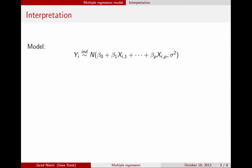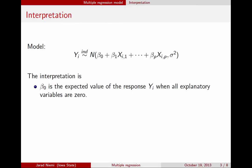Before getting to an example, I'll talk about the interpretation of the parameters for this model. The interpretation changes slightly from simple linear regression. The interpretation of the intercept is that it's the expected value of the response when all explanatory variables are zero. In simple linear regression we only had one, but now with many explanatory variables, if all x's were zero, this part would disappear and we'd be left with just beta0 as the expected mean of y.